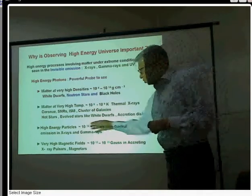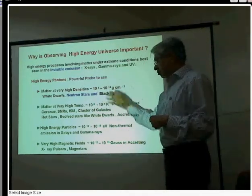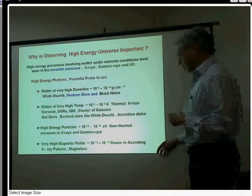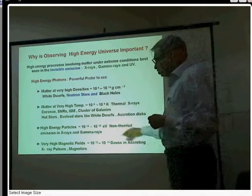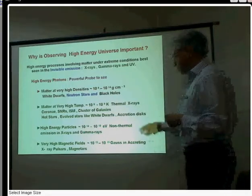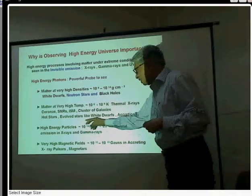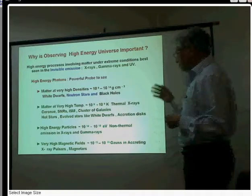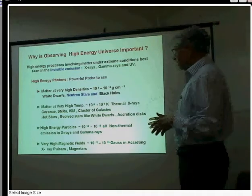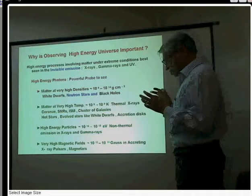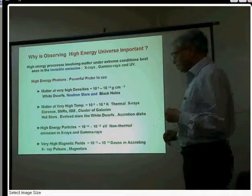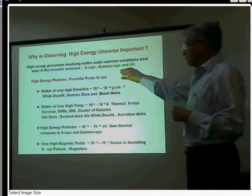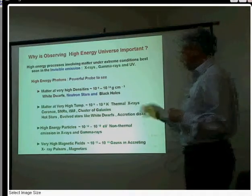Similarly, when there are high-energy particles you want to study, X-rays can be produced by processes known as synchrotron emission and the inverse Compton process. These are known as non-thermal processes or non-thermal emission. For synchrotron processes, you require electrons with energies in the range of 10^11 to 10^18 electron volts. So if you want to observe the high-energy universe — matter at very high density, very high temperature, high-energy photons and electrons, and very high magnetic fields found in neutron stars — then X-rays provide the best medium to probe the universe.